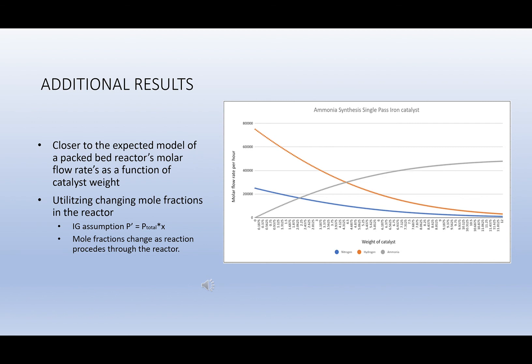In order to more accurately describe and represent the Haber-Bosch process in a single pass, we allowed the rate of reaction to change as partial pressures change due to mole fractions changing as the reaction proceeds through the weight of the catalyst in the packed bed reactor. The ideal gas assumption is assumed in order to calculate partial pressures based on mole fractions. As reactants are consumed, the rate of reaction goes down.